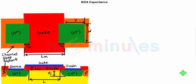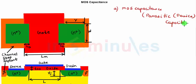Now we know that there are going to be two types of capacitance which are going to be present. One is going to be the MOS capacitance or the parasitic capacitance or the device capacitance. Parasitic means unwanted.